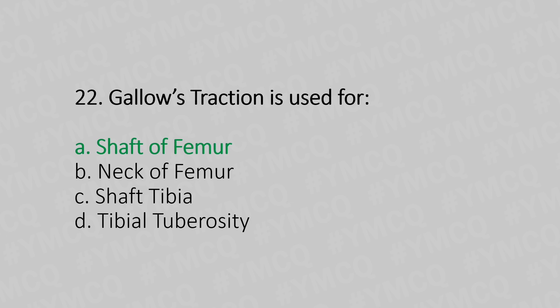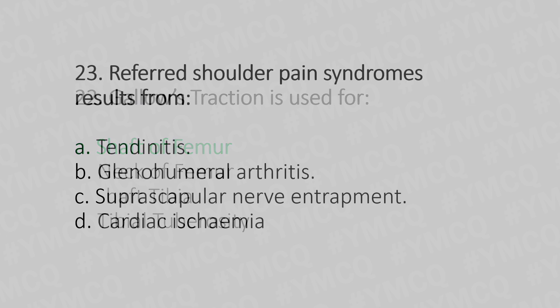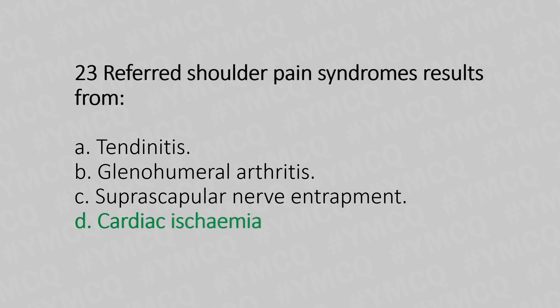Now let's move to question number 23. Pain around the shoulder in referred cases from: Option A, tendinitis. Option B, glenohumeral arthritis. Option C, suprascapular nerve entrapment. Option D, cardiac ischemia. And the answer is Option D, cardiac ischemia.